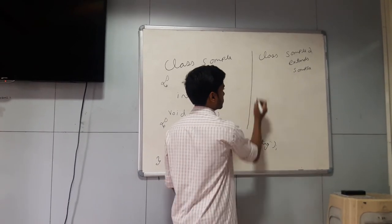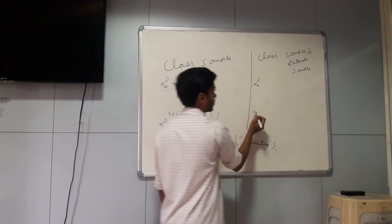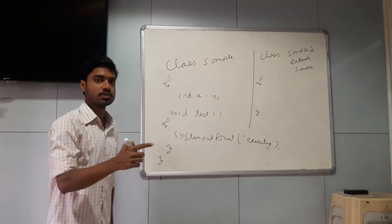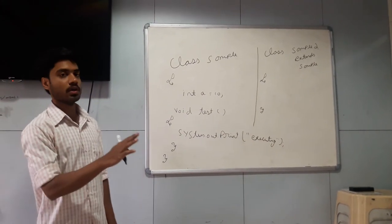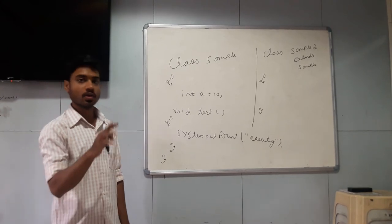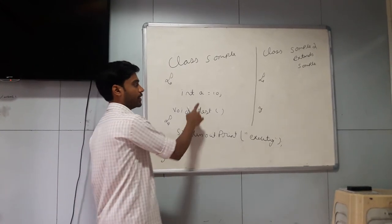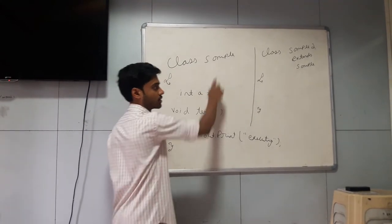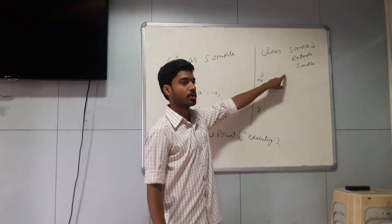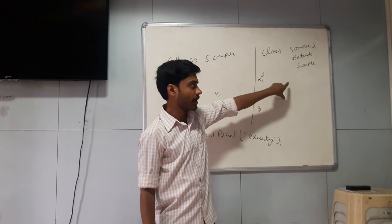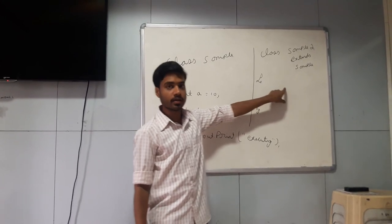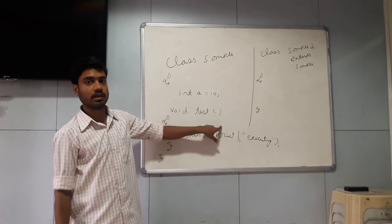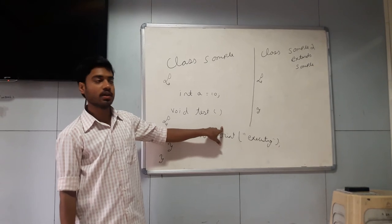So within this, as of now, this class sample2 doesn't consist of any of its own properties. But it still has two properties. Whatever the two properties are, it is going to inherit or acquire the property which is present in sample class. So totally, in this class sample2, I did not write any of my own methods. But I am inheriting the properties which is present in another class. This concept, I can call it as inheritance.